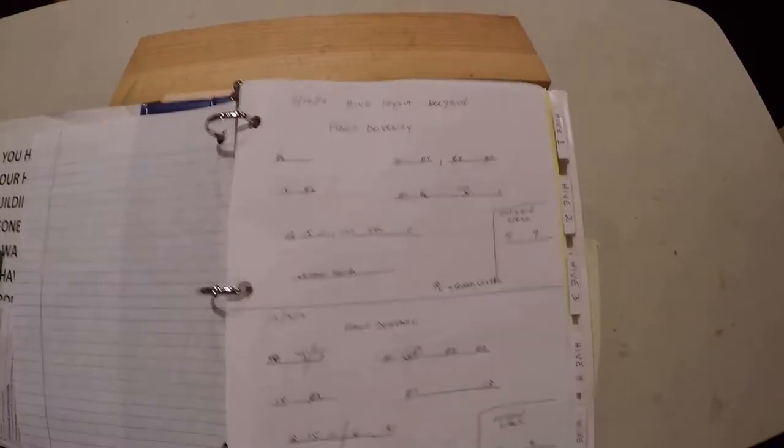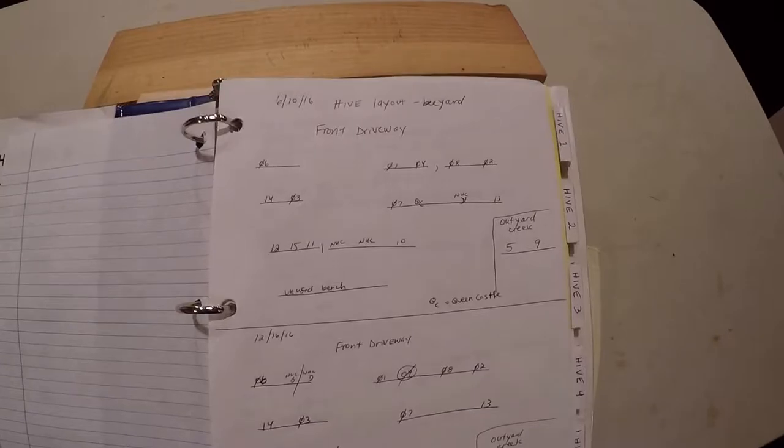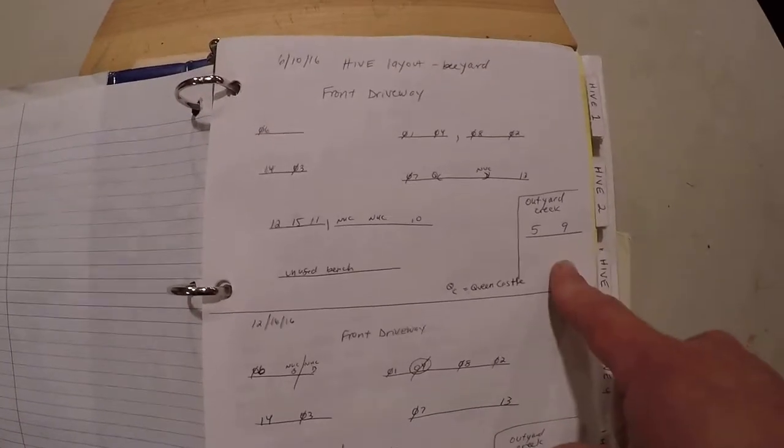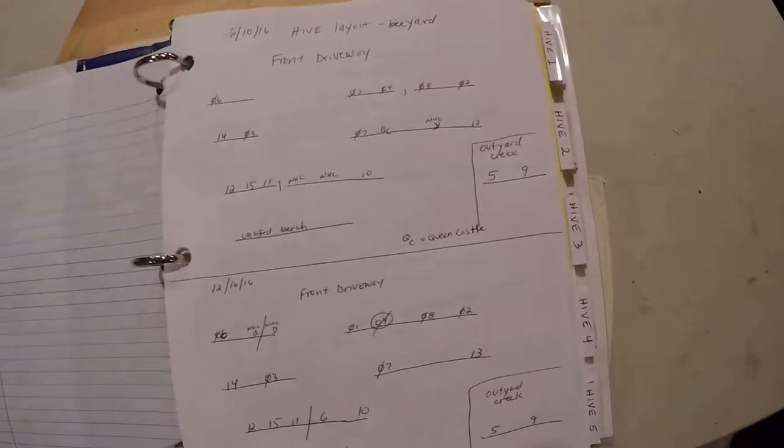It depends on how many hives you have. It helps you keep track of the location or where these things are, especially if you have a hive concern and you have somebody else coming to check your hives or you're trying to figure out exactly where it's at. I do have an out yard. It's away from me. The reference is the creek and on my stand, hive five and hive nine out there.